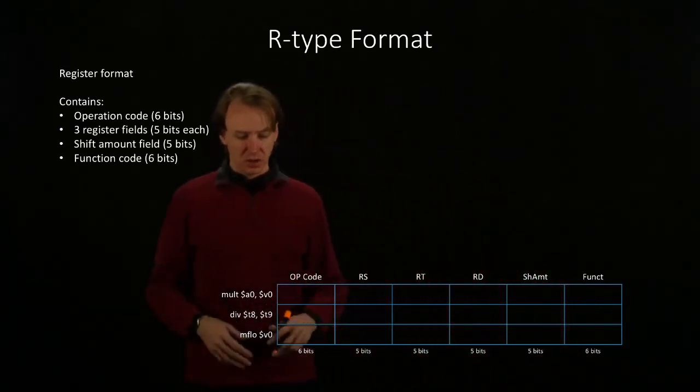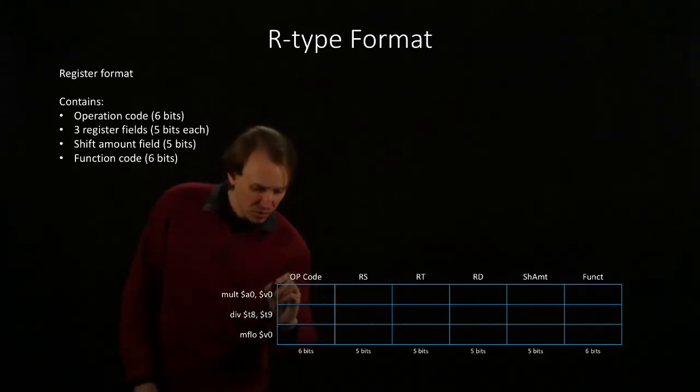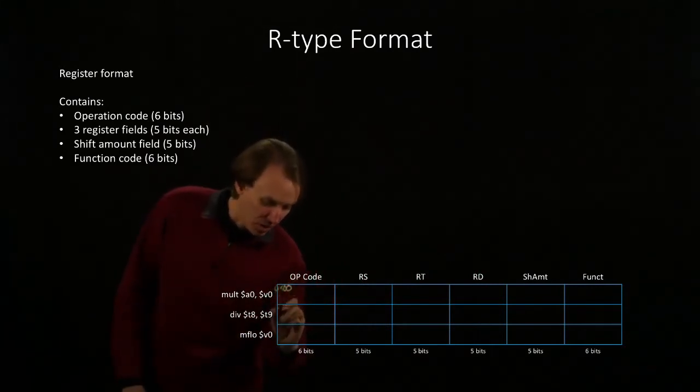All three of these are standard R-type instructions, so they will all have zero for their opcode.